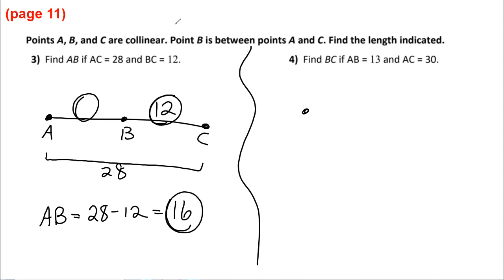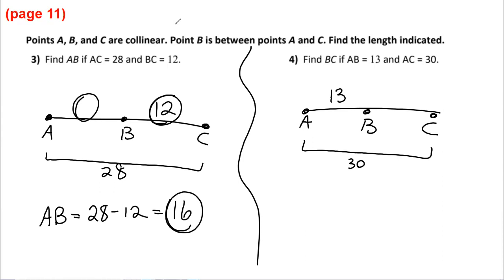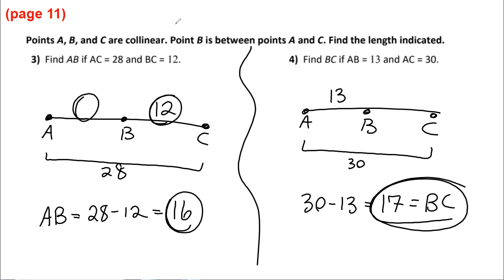For problem four, same setup — A, B, C with B in the middle. They want us to find BC, given that AB is 13 and AC is 30. The missing part: 13 plus that missing part equals 30, so 30 minus 13 gives you 17. That is the length of segment BC. Note that segment BC is written with a line over it, but the length of segment BC has no line — it's just BC.